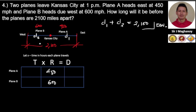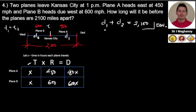When the two planes are 2100 miles apart, their times are equal — T1 equals T2. Therefore, we can say that the time for both planes is X. Applying our formula, rate times time equals distance: Plane A's distance is 450X and Plane B's distance is 600X.